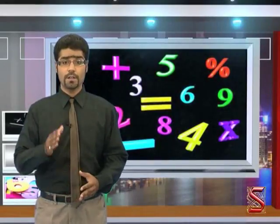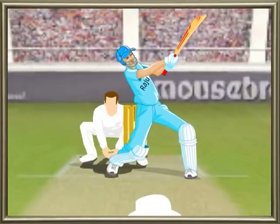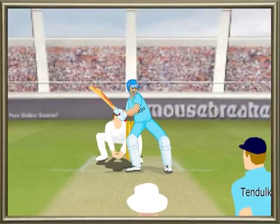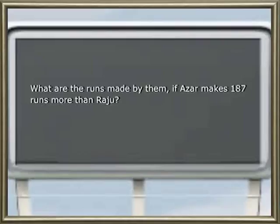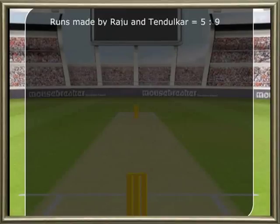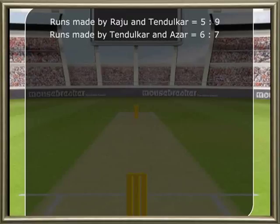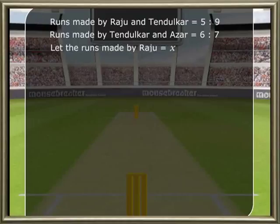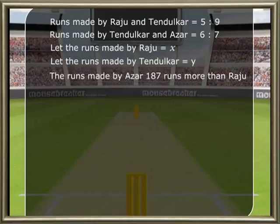Sometimes we estimate the capability of a cricket player with his run rate. In a cricket test series, the runs made by Raju and Tendulkar are in the ratio 5 is to 9, and Tendulkar and Azhar are in the ratio 6 is to 7. What are the runs made by them if Azhar makes 187 runs more than Raju? Let the runs made by Raju be x and the runs made by Tendulkar be y.